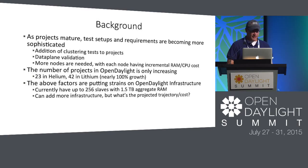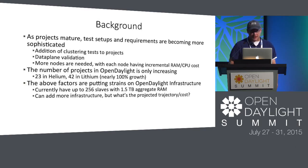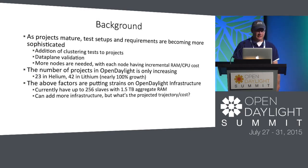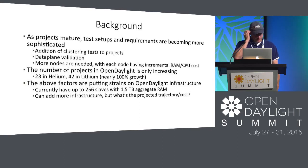The number of projects in Open Daylight is increasing — we had 23 in Helium, 42 in Lithium, and we don't know yet how many in Beryllium. We have the capacity for up to 256 slaves, currently seeing about 145 in use, with 1.5 terabytes in aggregate — and we had to bump that up recently. This is just projecting about what we have today and where we're going. We can add more infrastructure, but what's the cost and what kind of trajectory are we on?